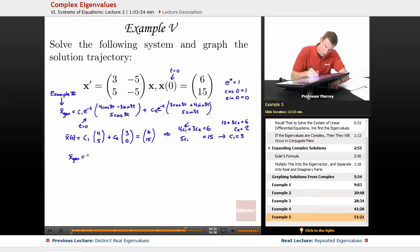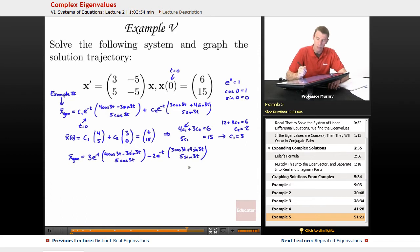So that gives me my C1 and C2. I'll plug those back into the general solution. My C1 was 3, so 3e to the negative t times (4 cosine 3t minus 3 sine 3t, 5 cosine 3t). My C2 was negative 2, so minus 2e to the negative t times (3 cosine 3t plus 4 sine 3t, 5 sine 3t).